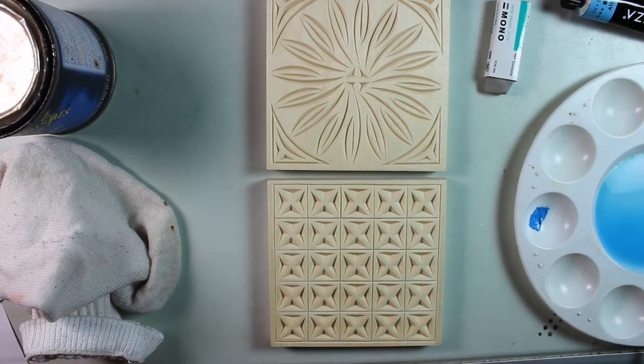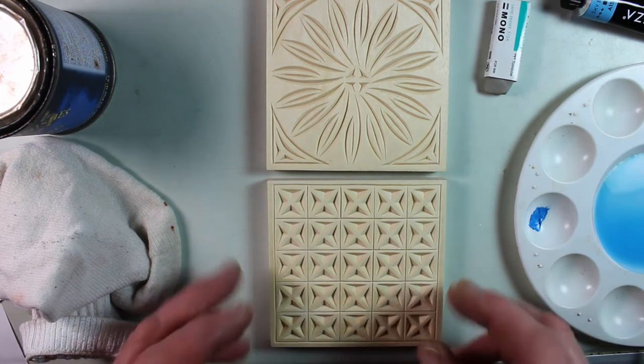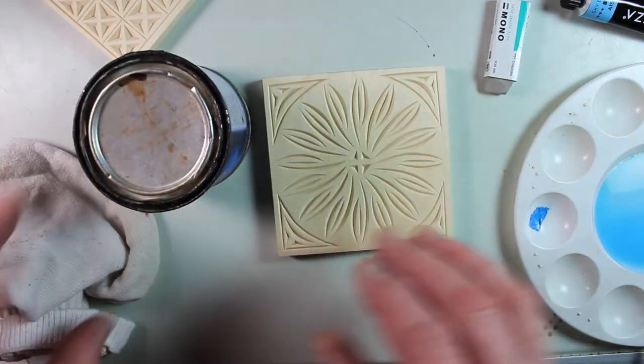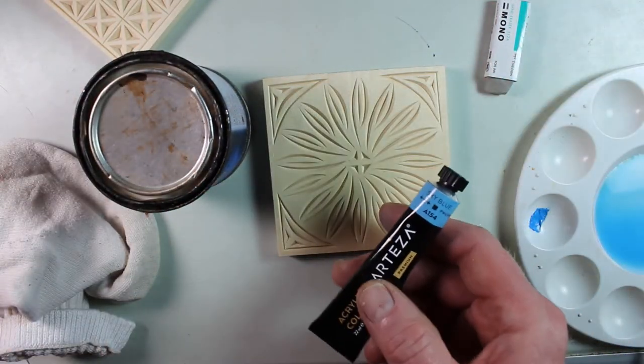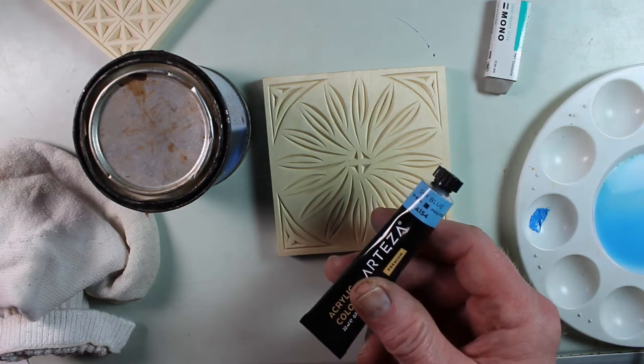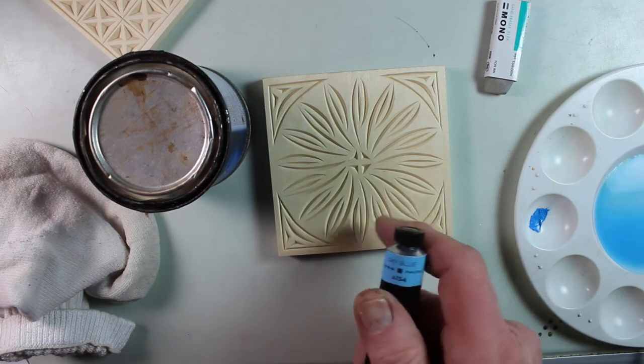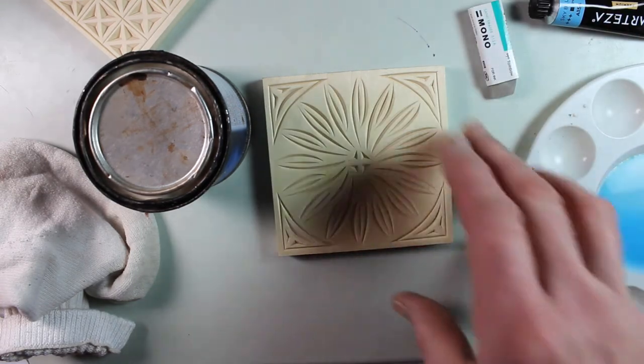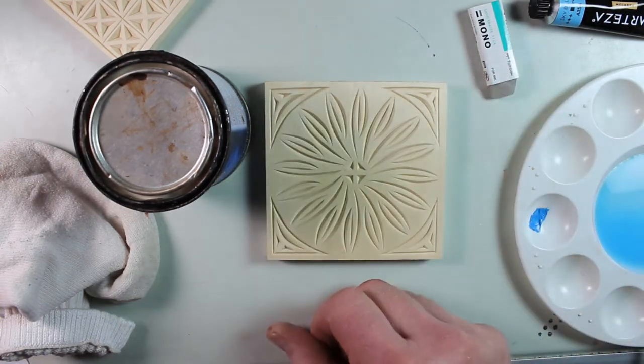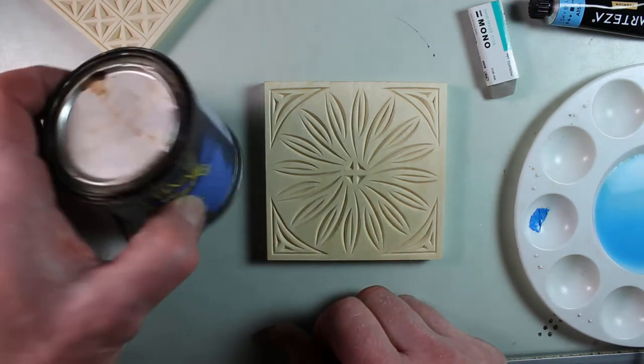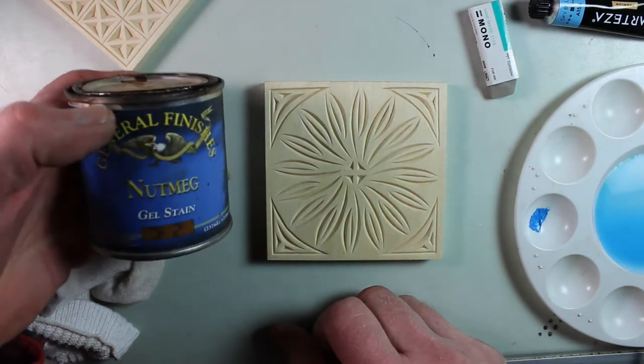If you'd like to add some color to it, here's what you can do. You can use acrylic just like we did with the easy board pieces. You can brush it on and wipe off the surface just like we were doing. Choose your colors. Be as creative and colorful as you like. Or you can use a gel stain.